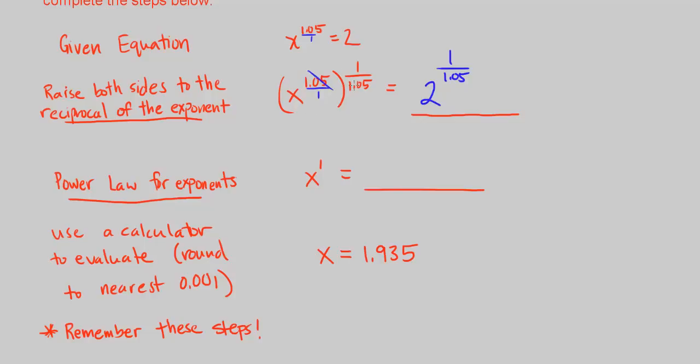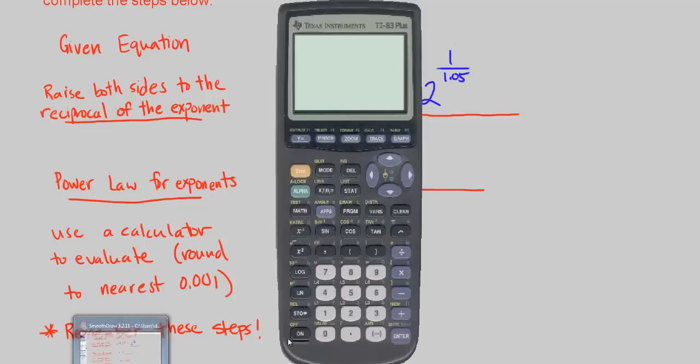Then 1.05, these cancel out. And you're left with 1. So the power law for exponents basically tells us that you multiply these and they cancel out. So you get x to the 1 power and we still have 2 to the power of 1 over 1.05 and we can use our calculator to do that.